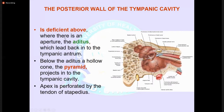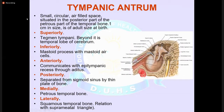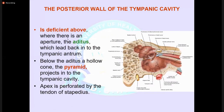The posterior wall of the tympanic cavity is deficient above, where there is an aperture — the aditus — which leads back into the tympanic antrum. Below the aditus, a hollow cone, the pyramid, projects into the tympanic cavity; its apex is perforated by the tendon of the stapedius. Knowing the exact anatomy of the ear helps you identify all structures during surgery and locate disease in cases of chronic suppurative otitis media or mastoiditis.